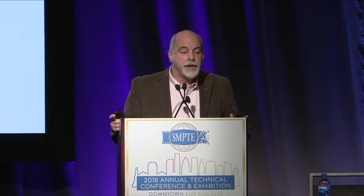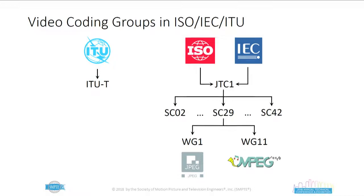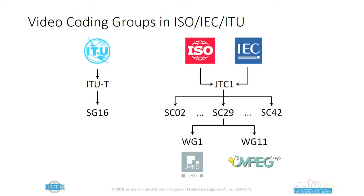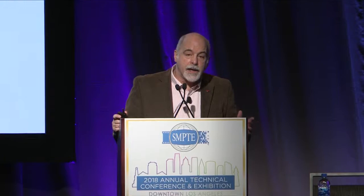Parallel to that, ITU has several groups — ITU-T, ITU-R, ITU-D. ITU-T is the one of interest to us here. Underneath it is a series of specialist groups. Study Group 16 is of interest to us, and underneath that are specific questions. Question 6 covers a group called the Video Compression Experts Group, or VCEG — that's the one Jill is the associate rapporteur of. It's sort of an ITU parallel to MPEG. The J in JPEG is joint between ISO-IEC and ITU, so it's a permanent joint committee between the two.